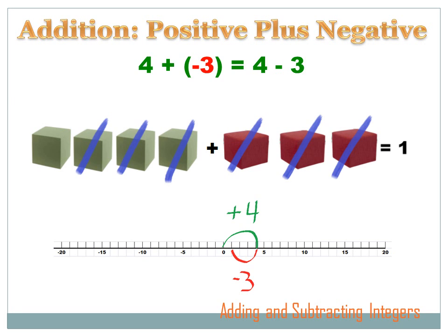What happens when we add a negative number to a positive number? Four plus negative three, for instance. There are a couple of ways to look at this. On the number line, we start at zero, go four to the right because it's a positive number, then we add negative three — negative means go to the left — so we go one, two, three to the left, and end up at one. Another way: wherever you have a plus and a negative, they combine to a negative. So four plus negative three can be rewritten as four minus three.